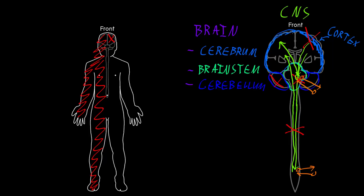We can also see diffuse dysfunction of the cerebrum, particularly the cerebral cortex. This is a common occurrence which can often affect the higher neural functions like cognition, while often sparing the lower neural functions like motor and sensory functions, depending on what parts of the cerebral cortex are involved.